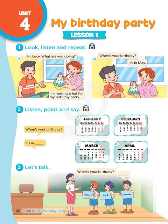A. When's your birthday? It's in January. B. When's your birthday? It's in February. C. When's your birthday? It's in March. D. When's your birthday? It's in April.